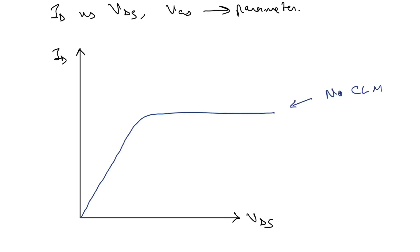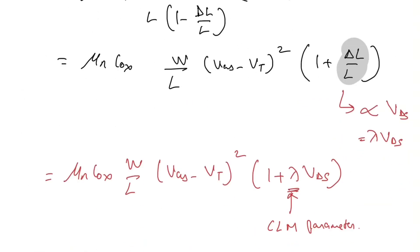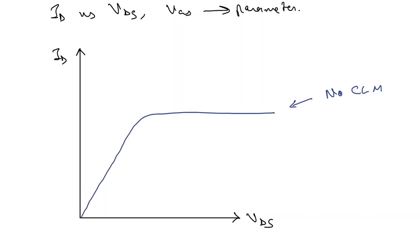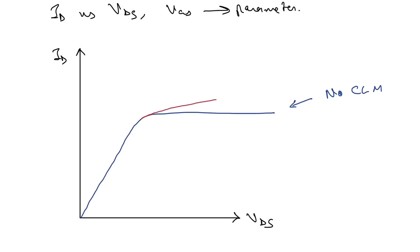On the ID vs VDS plot, without channel length modulation the saturation current is flat. Due to the (1 + λ·VDS) term, there is a linear relationship with VDS, so the curve has a slight upward slope in the saturation region. This slope is equal to λ.